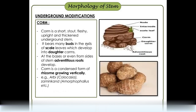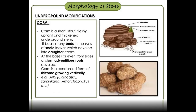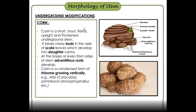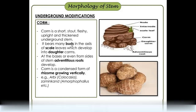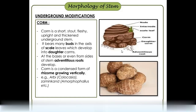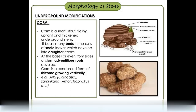Next is corm. Corm is an underground modification. The difference between corm and rhizome: rhizome is horizontal, while corm is vertical. That's the main difference. Corm is small, almost spherical and round. There are buds — these buds are daughter corms — and there are adventitious roots. Examples include Colocasia and chamagadda (Amorphophallus).